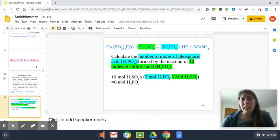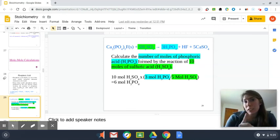It's asking me to calculate the number of moles of phosphoric acid. If it's asking me for something, it's desiring it. Remember that formed by the reaction of 10 moles of sulfuric acid, H2SO4. So here's my start: 10 moles. That's the given, that's the starting information.